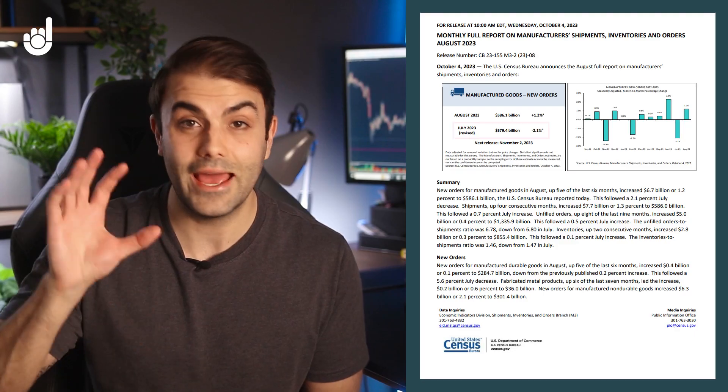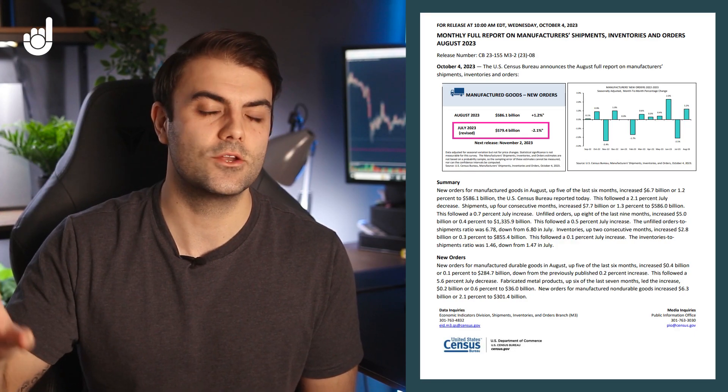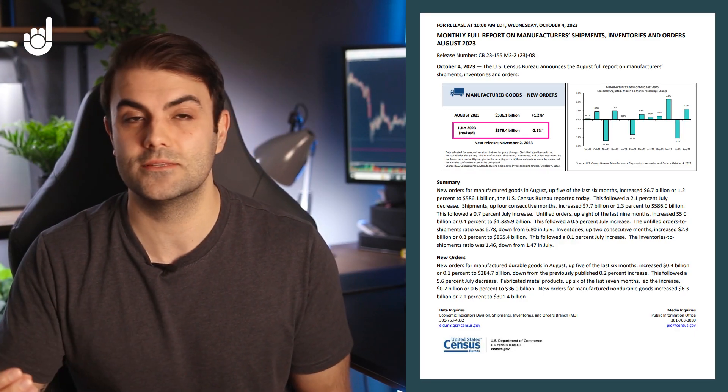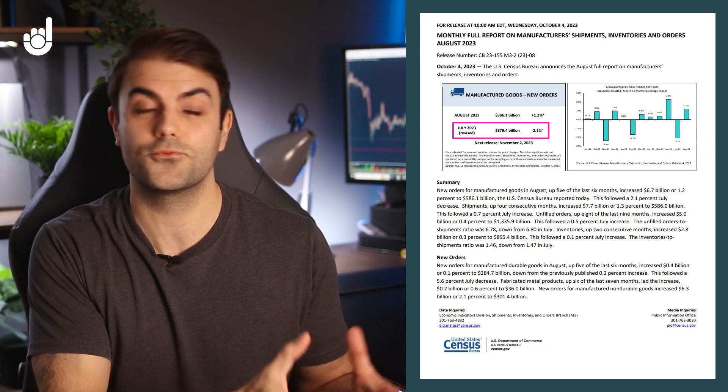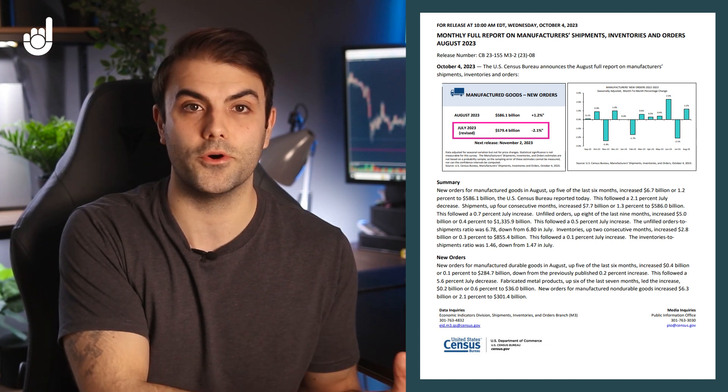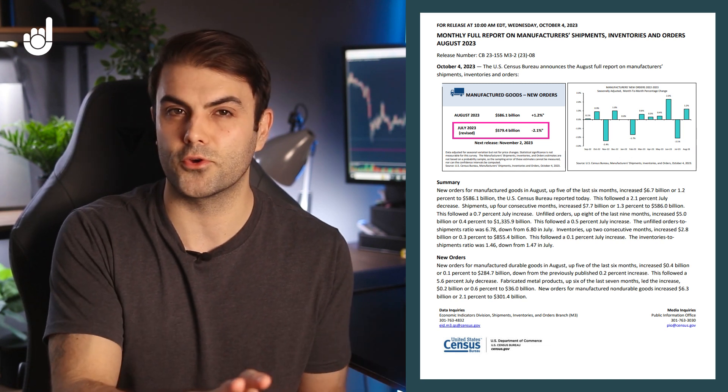Since purchases of non-durable goods tend to remain fairly consistent, the headline figure for factory orders can often be predicted based on the durable goods release from the week before. Durable goods makes up about 45% of the release.